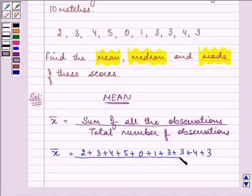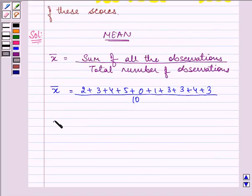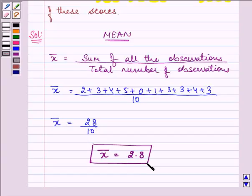The whole divided by the total number of observations, that is 1, 2, 3, 4, 5, 6, 7, 8, 9, 10. And the answer comes out to be 28 by 10, that is 2.8. This is the answer to the first part.